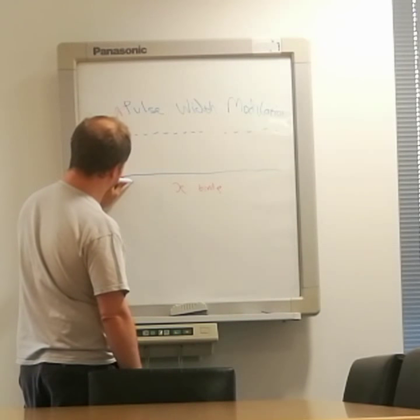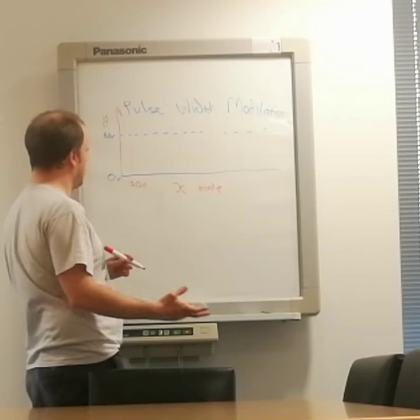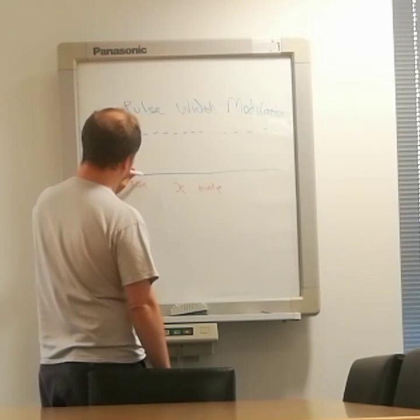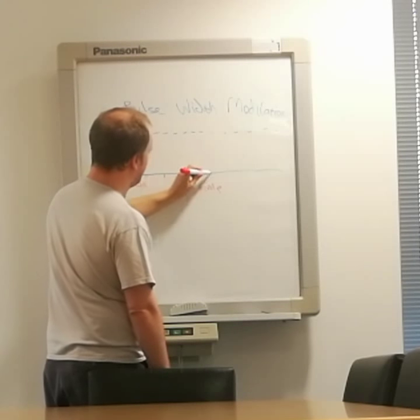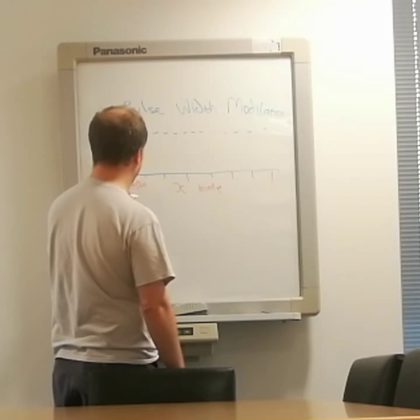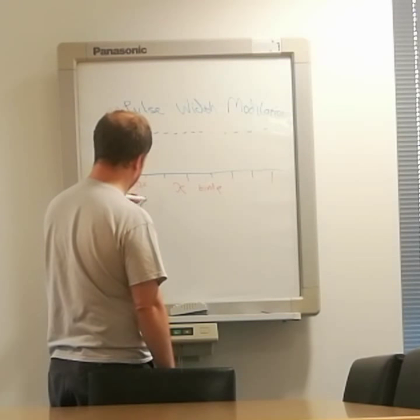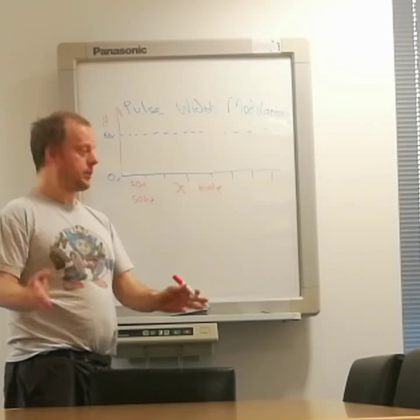Say we had at some point what we call a duty cycle of 50%. So 50% on, 50% off. Imagine that this was your period of the wave. This might be, say, 50 hertz. And that depends upon the specification of your motor and your controller.